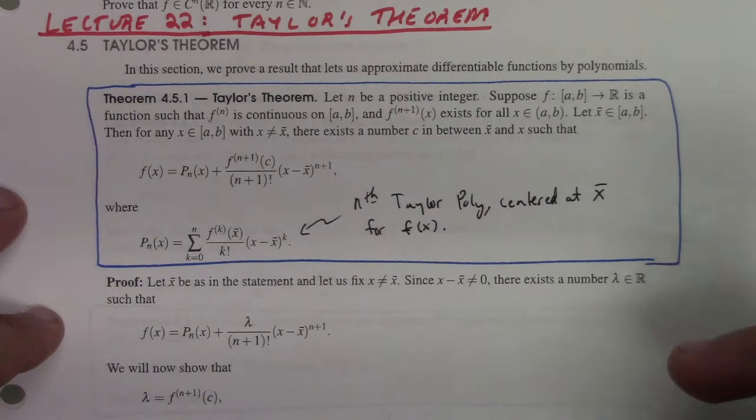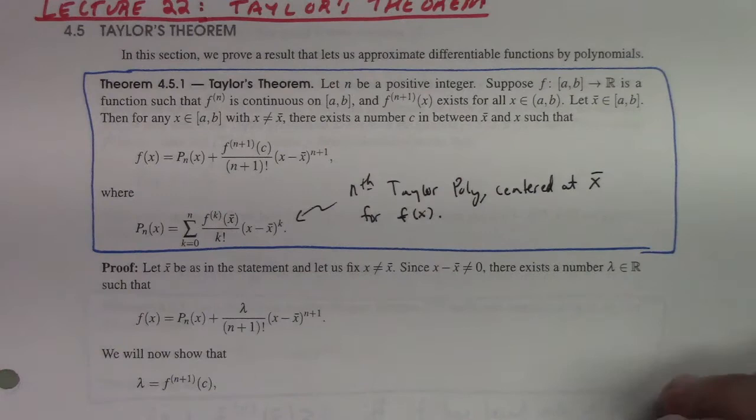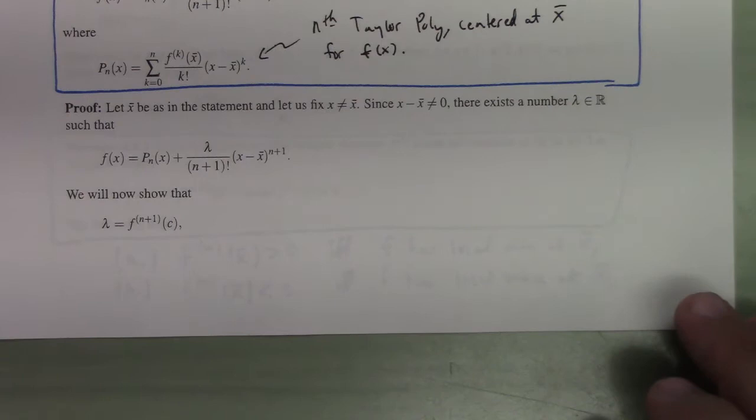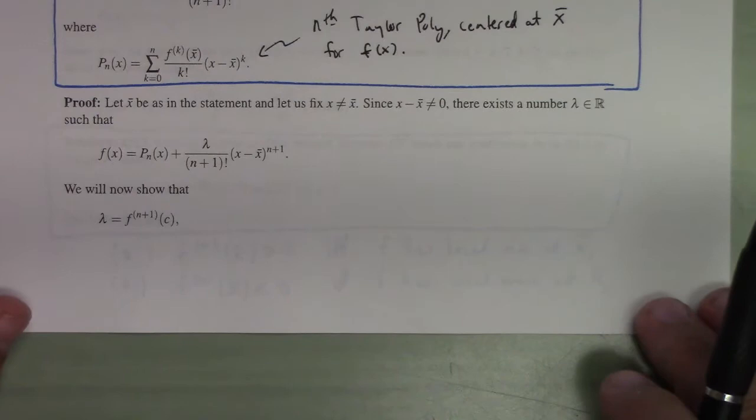So let's look at the proof. The proof is essentially the same as the proof of the Mean Value Theorem in some sense. It basically rests on a clever construction that will allow us to use Rolle's Theorem, and then Rolle's Theorem will be what actually does the work.